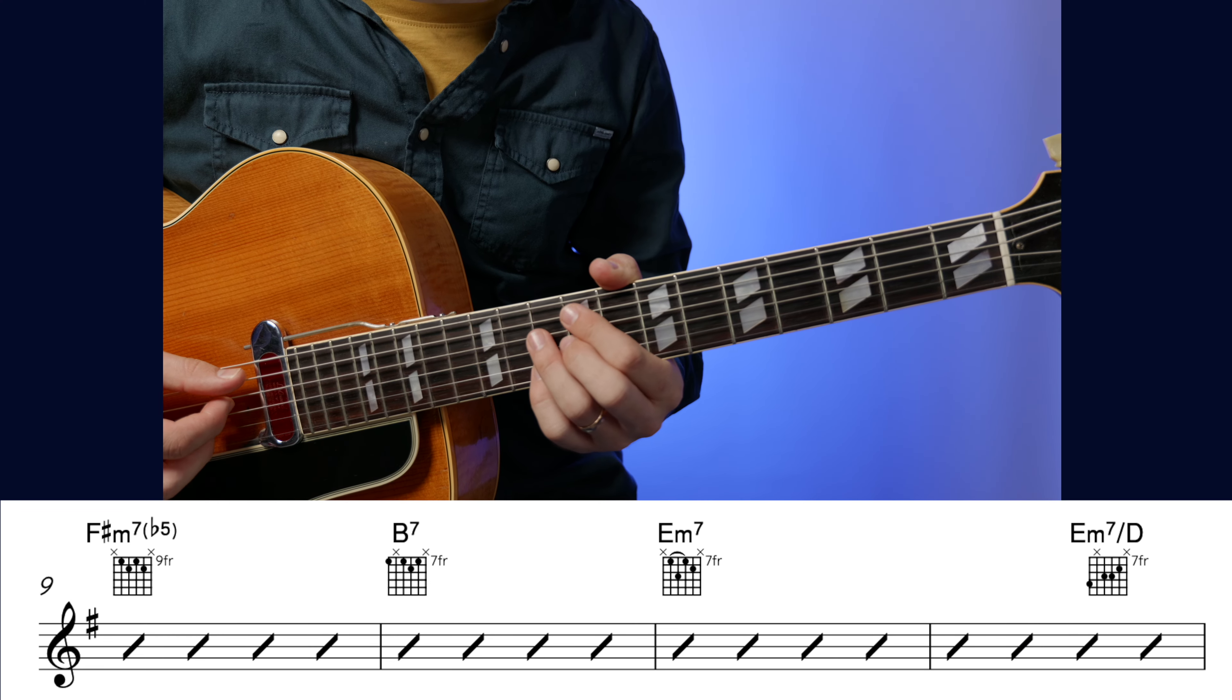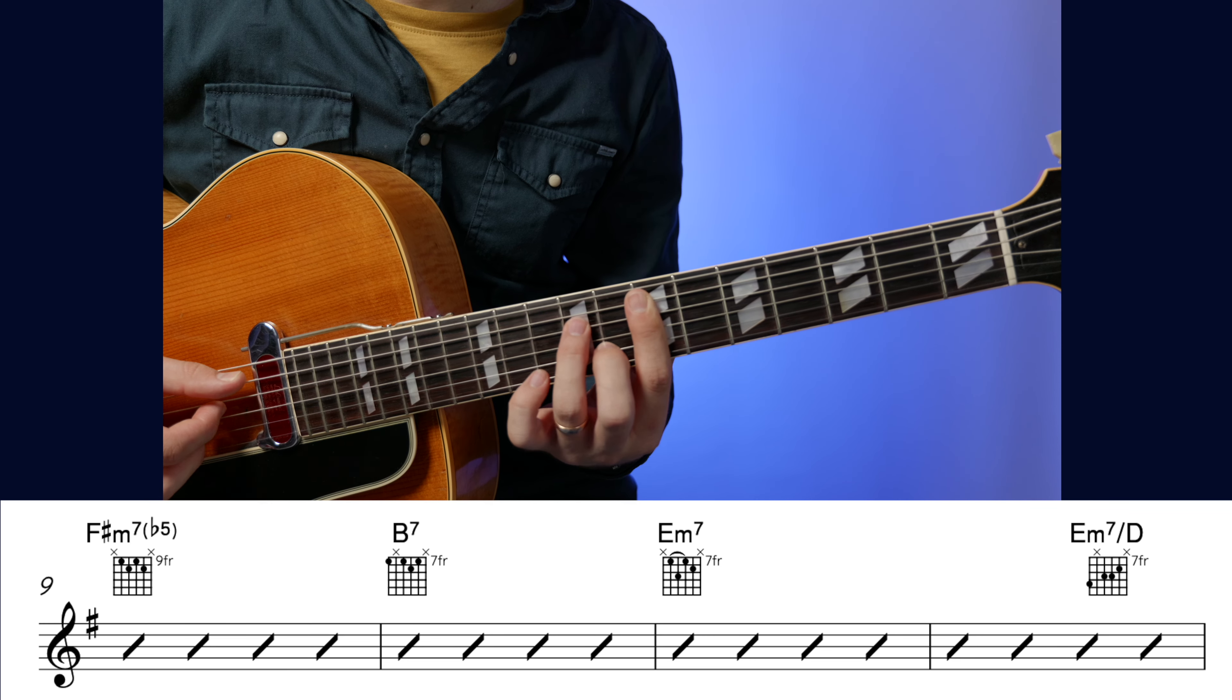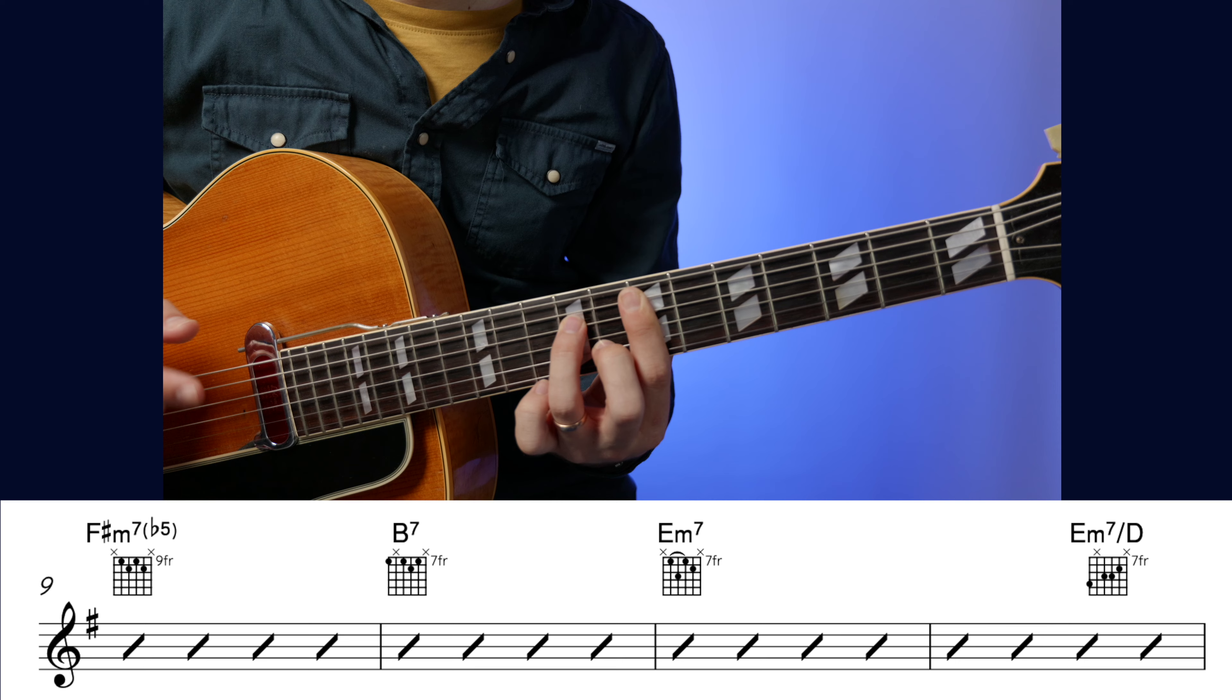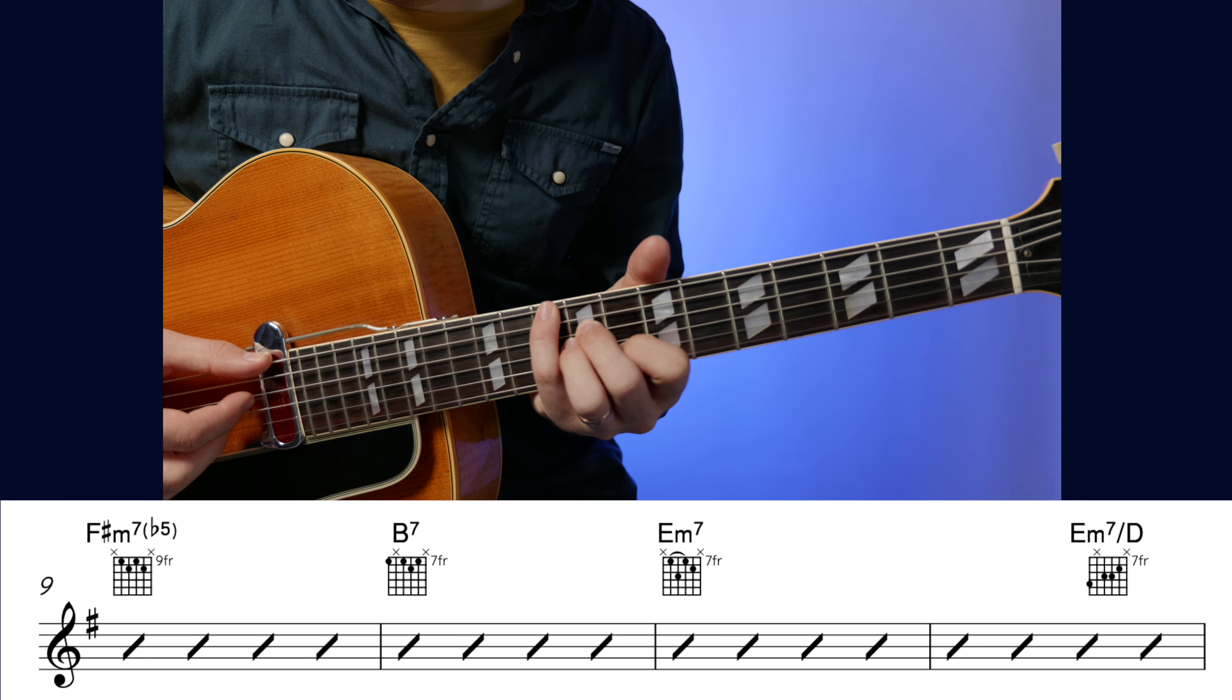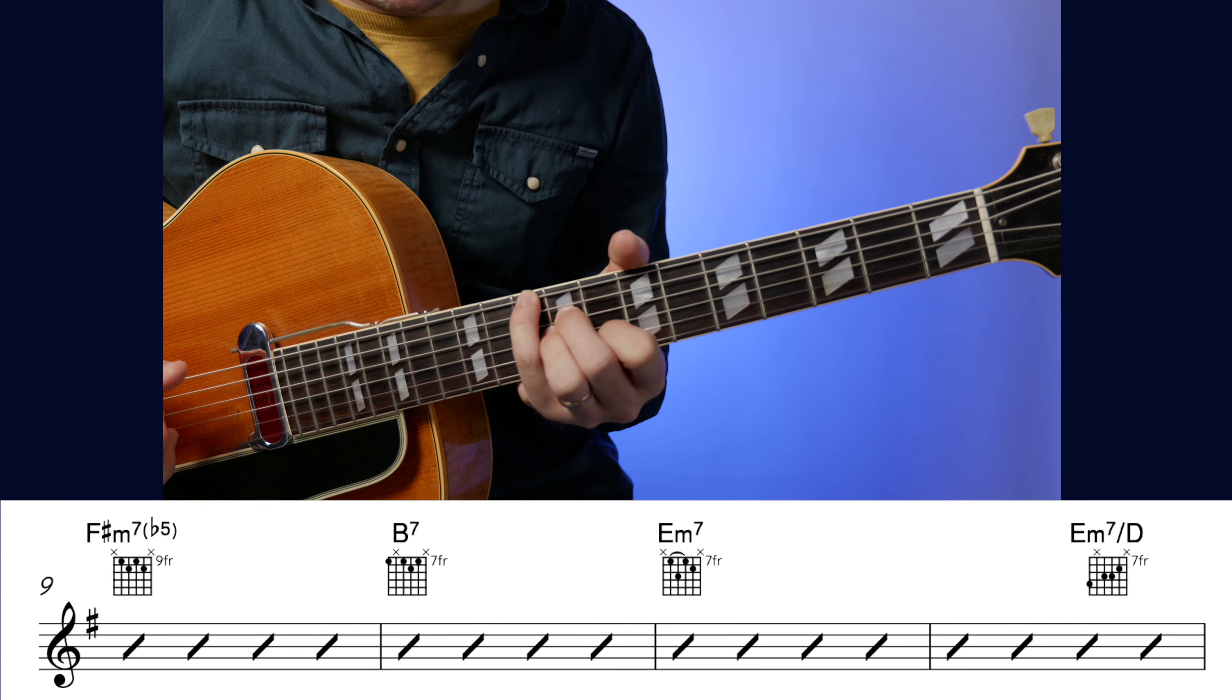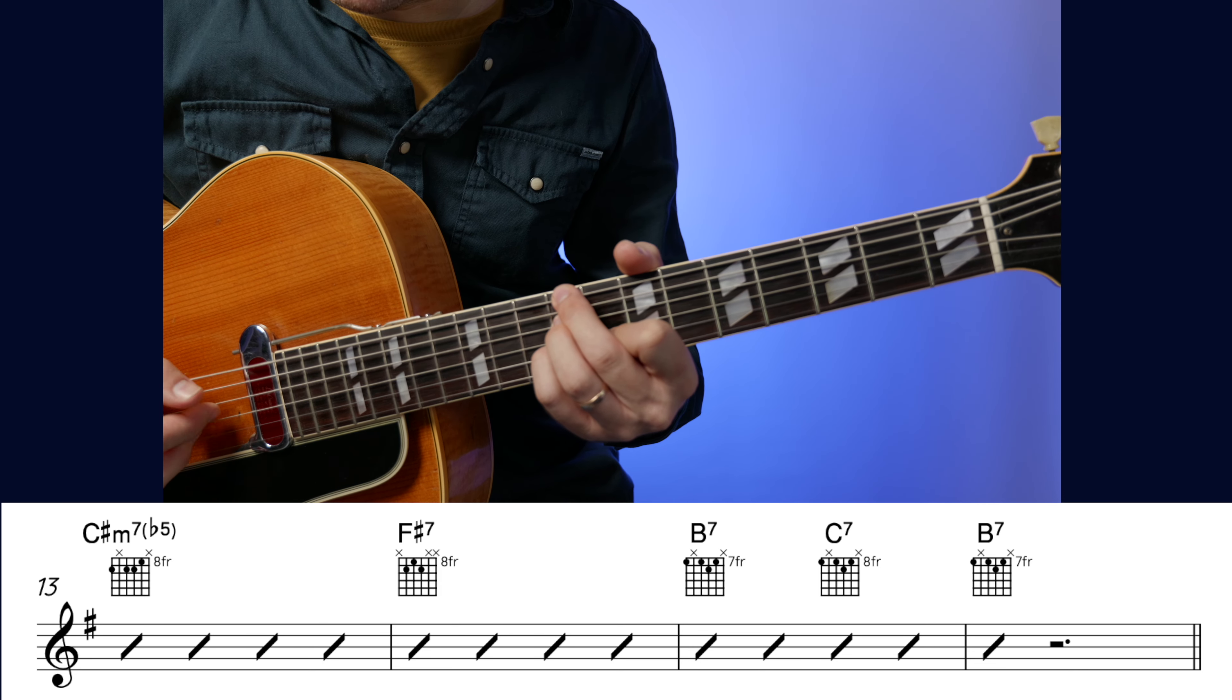And the next eight bars, bars 9 to 16, go like this. F sharp minor 7 flat 5, leading to B7, to E minor 7. Now we're going to play this for one and a half bars. So like one, two, three, four, one, two. And then on the last two beats of that bar, we're going to play an inversion of E minor 7, E minor 7 with D in the bass, which is the seventh in the bass. Leading us, that bass note leading us down to a C sharp minor 7 flat 5.